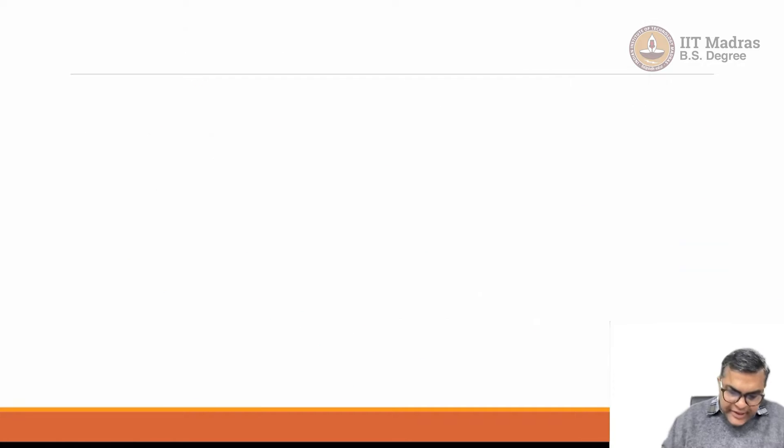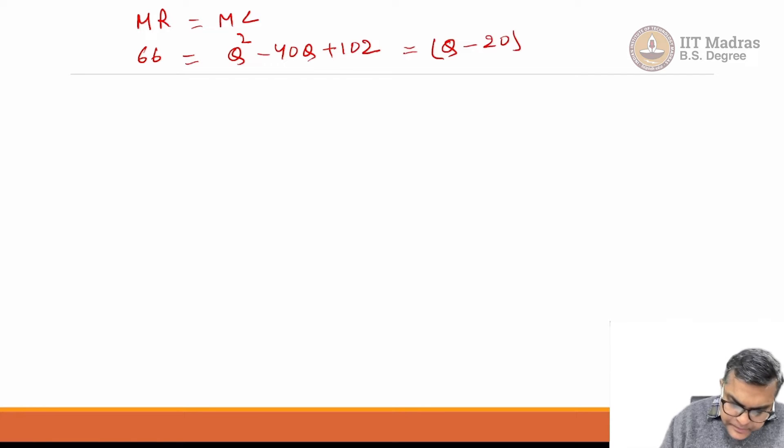Let us go to the next page. What we have here is MR is equal to MC. MR is given as 66. This is q² minus 40q plus 102. There are different ways to solve it. This is a quadratic equation. One way to solve it is to write (q minus 20)².